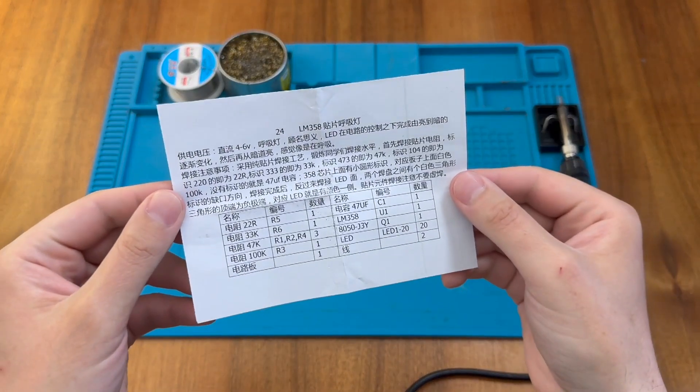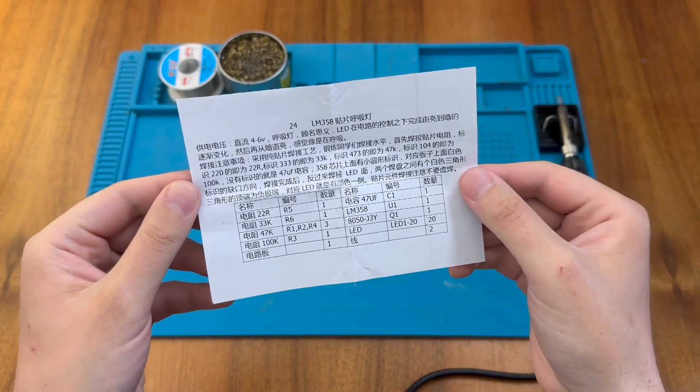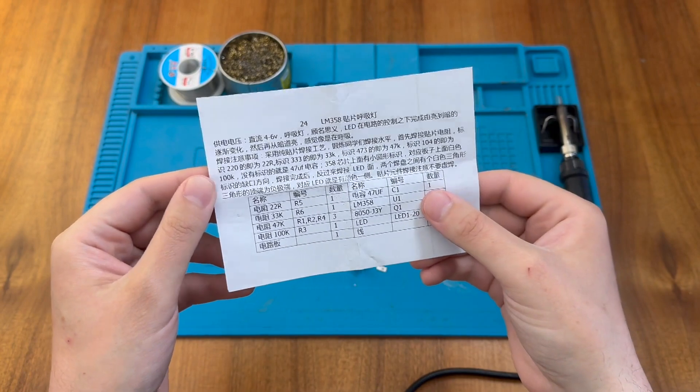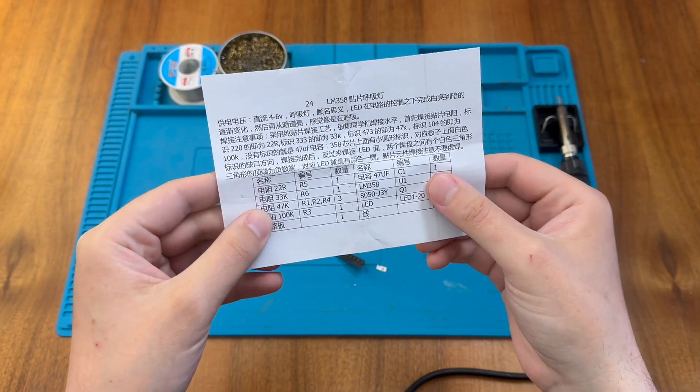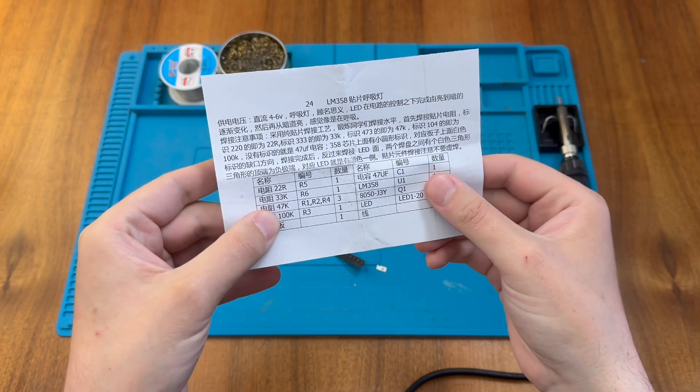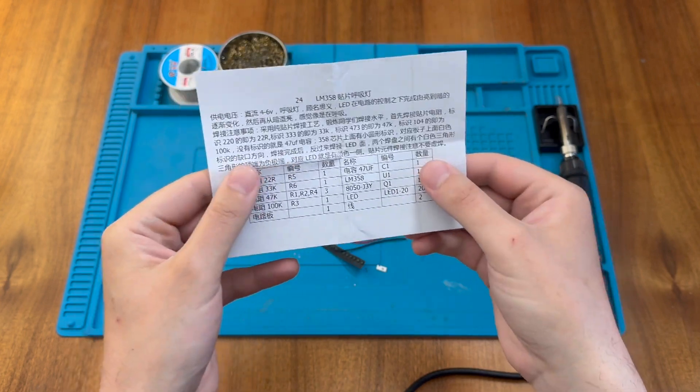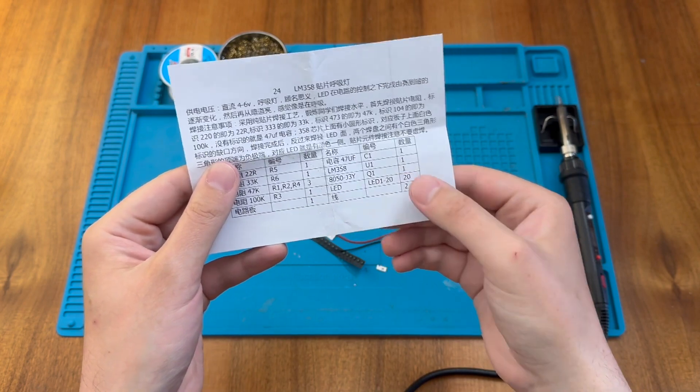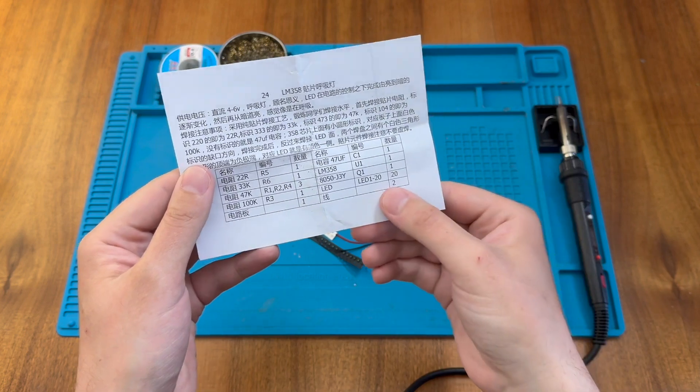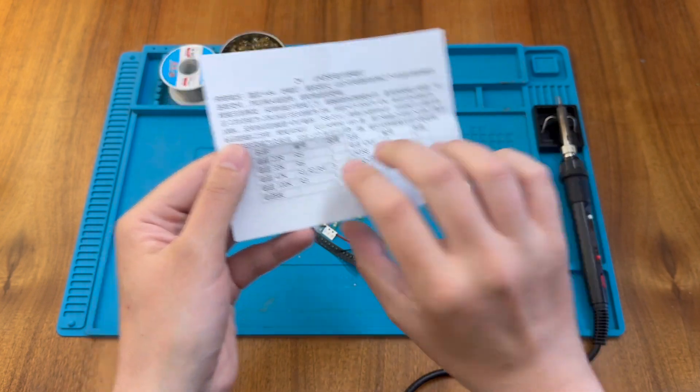So here's our instruction sheet, as usual in a language I can't read, but it tells us what parts we should have, including some 22 ohm resistors, 33k resistors, 47k resistors and 100k resistor, capacitor, an IC, transistor and 20 LEDs along with what I assume are the two wires.